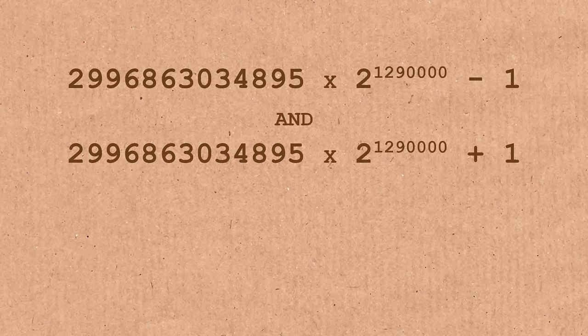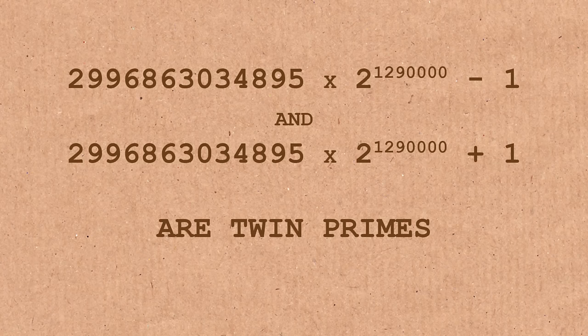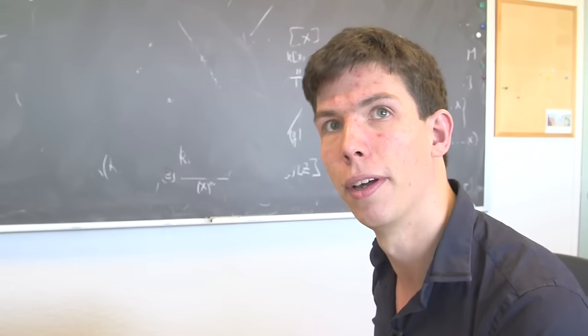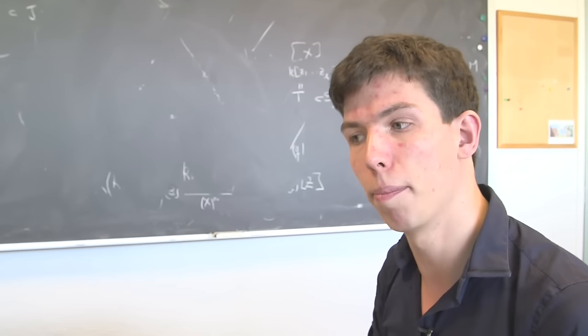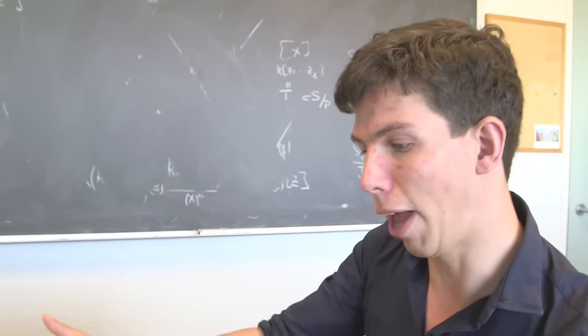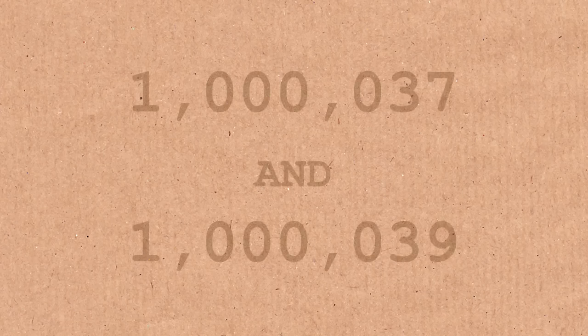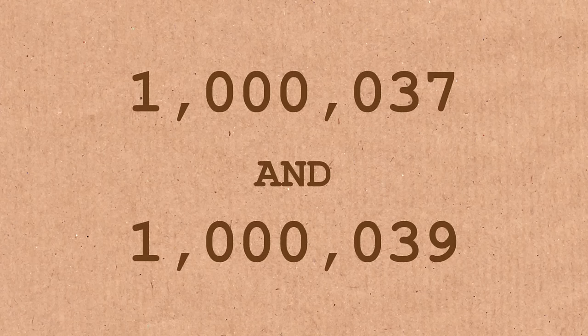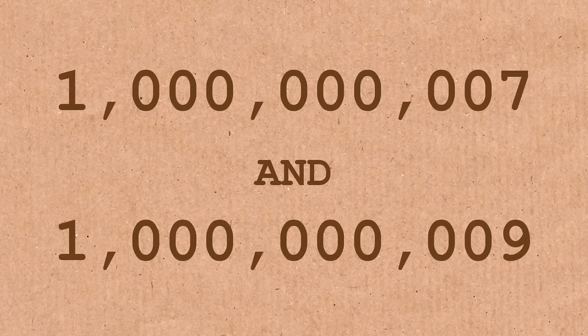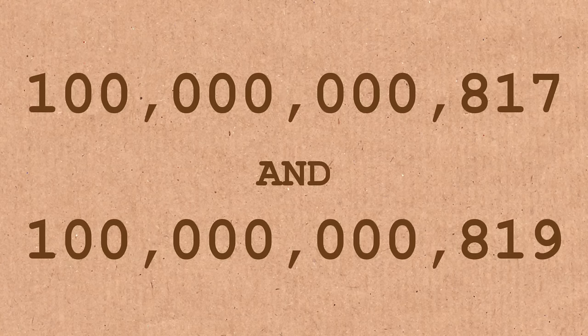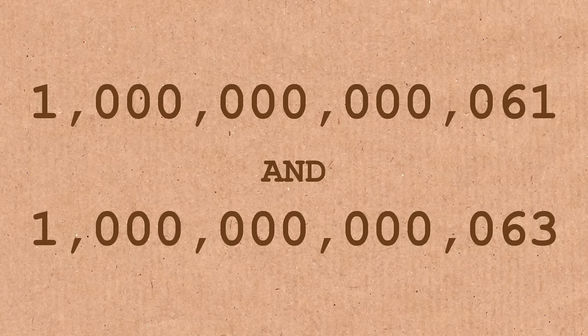You can test this on a computer and we've found pairs of primes that differ by exactly 2 with over 300,000 decimal digits. They're surprisingly common. It's certainly not all the time, but if you look after a million to find a pair of twin primes, it's not very far. After a billion, not very far. After a thousand billion, it's actually not very far until you start finding twin primes.